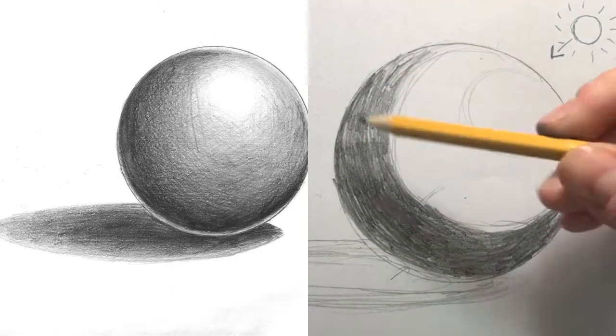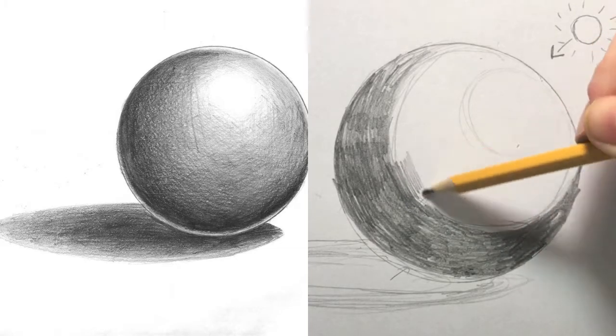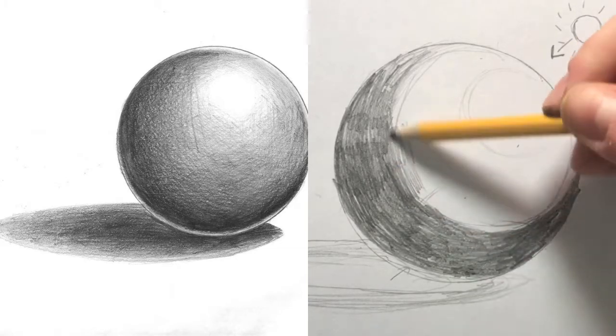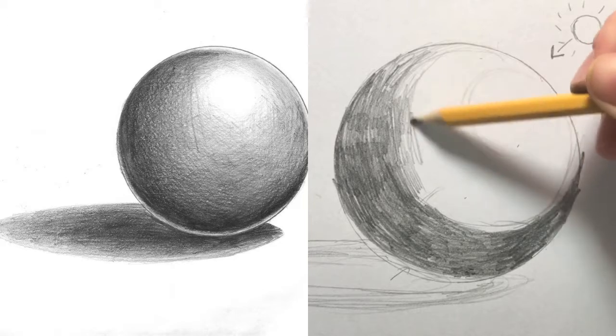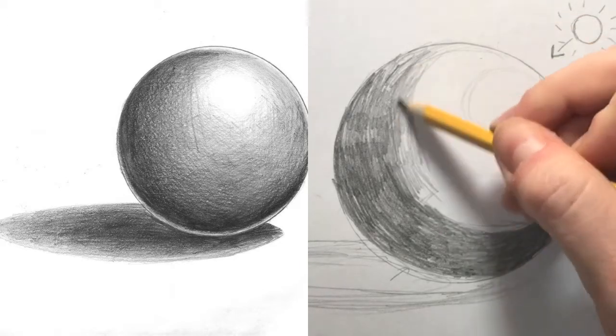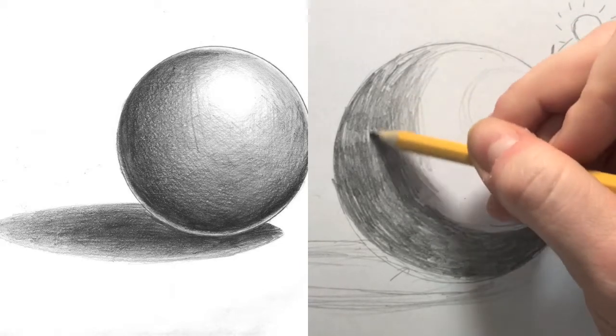As you move up closer to your light source, get to a more medium value. You don't want your sphere to look like it has stripes though, so it's important to blend the dark and medium value together.